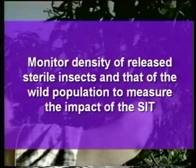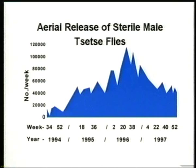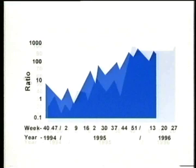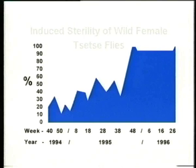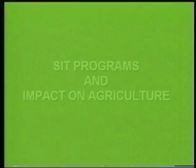Monitor the density of released sterile insects and that of the wild population in order to measure the impact of the SIT. To illustrate using data from a tsetse fly eradication program: increase numbers of released sterile males raise the sterile to wild ratio and the percentage of induced sterility, resulting in the decline and eventual extinction of the wild fly population. Monitor the area periodically. If the pest has been eradicated, geographic barriers may prevent natural invasion. Establish barriers or quarantine procedures to prevent reinvasion or reintroduction.